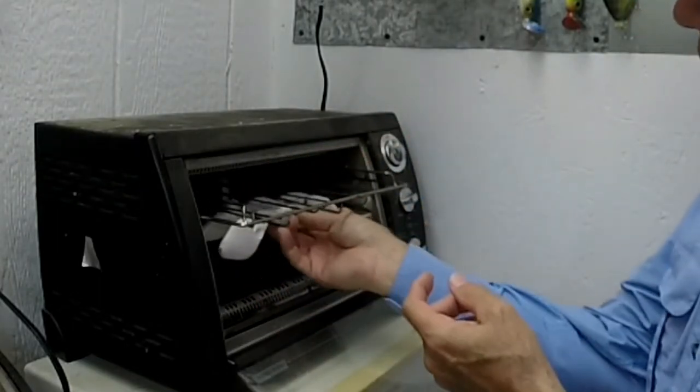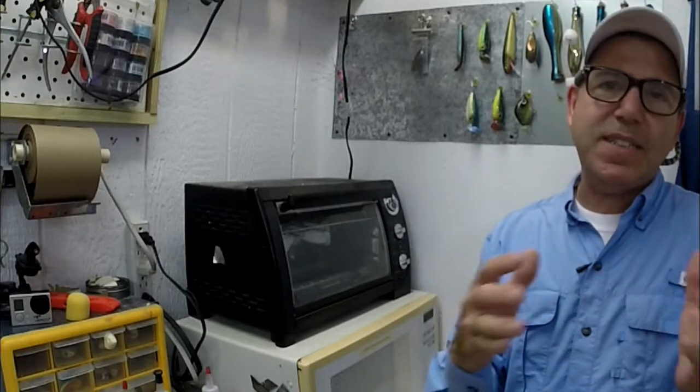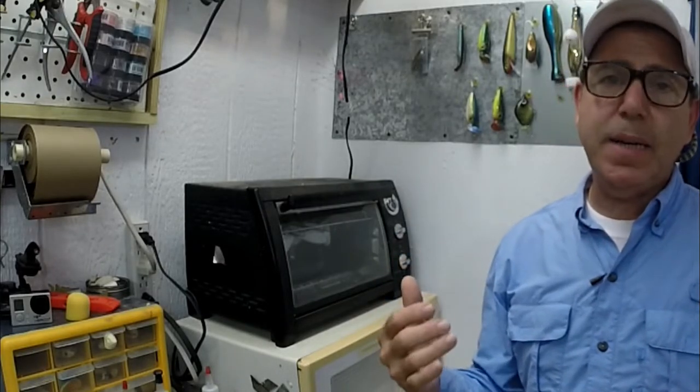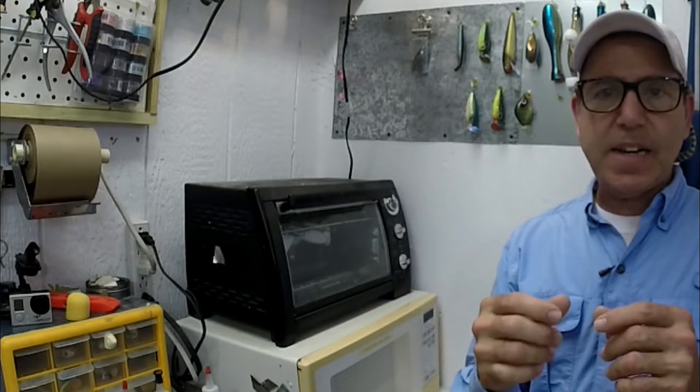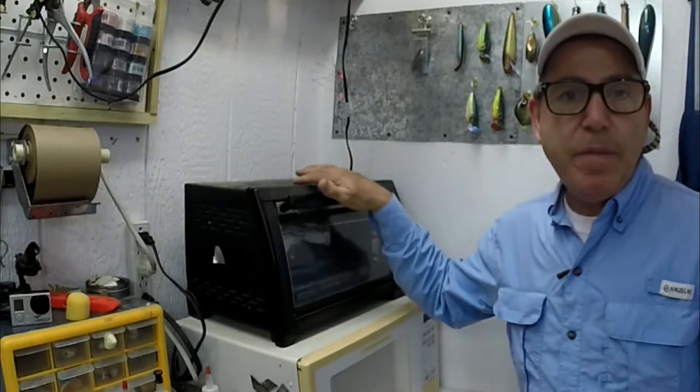Now what I've done with this toaster oven is I've taken the original rack and I've cut the ends off and turned them up so I can use it as a hanger. The key is to heat it up to about 150 to 170, don't go over 170 degrees. The resin can take pretty high temperatures. It will tend to get a little bit soft and it might change shape on you. After they bake for two hours.